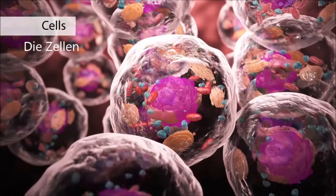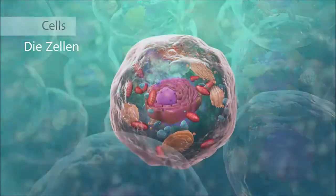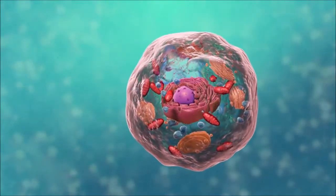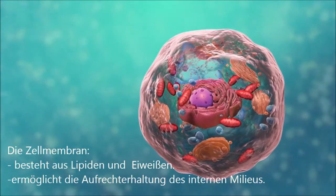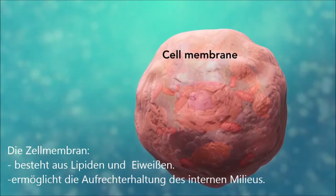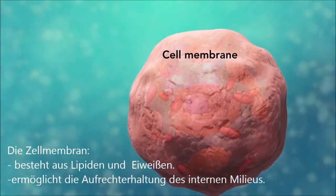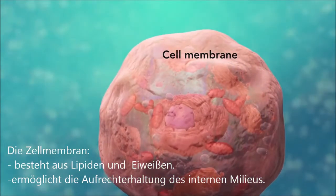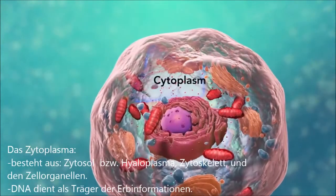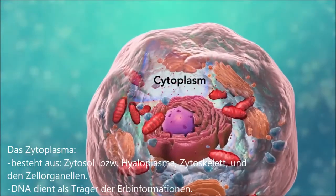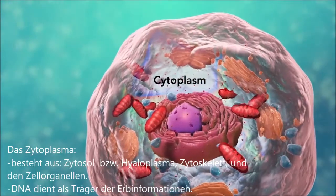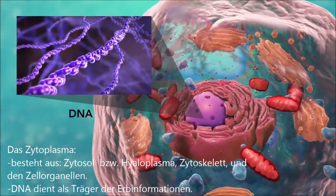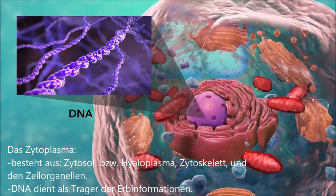All cells have three things in common, no matter what type of cell they are. All cells have a cell membrane, which separates the inside of the cell from its environment, cytoplasm, which is a jelly-like fluid, and DNA, which is the cell's genetic material.